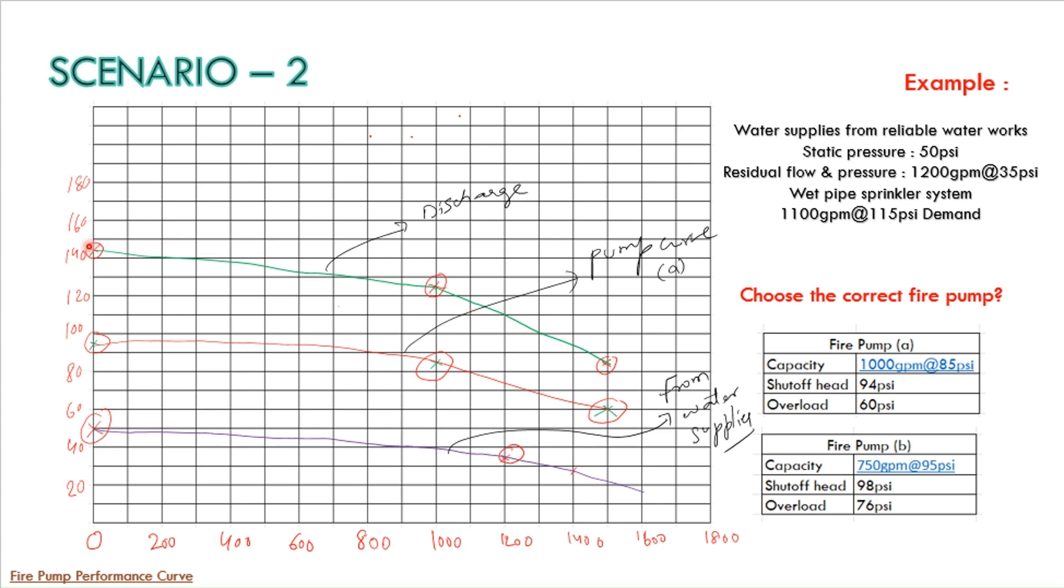If our system demand requirement is below this particular curve we can go ahead and consider this option A fire pump. So if you look at our requirement it is 1100 GPM at 115 PSI. So you have here 1100 GPM and 115 PSI it will come around here.